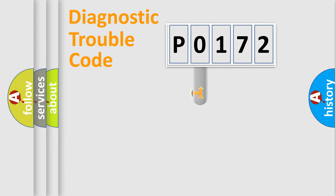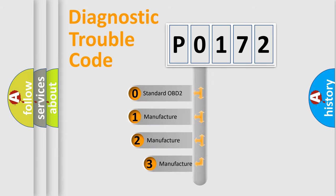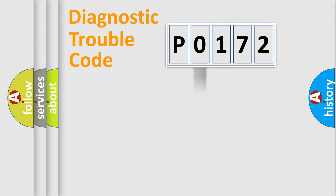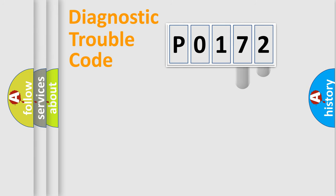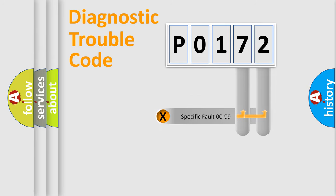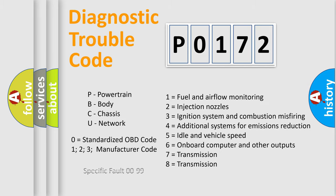This distribution is defined in the first character of the code. If the second character is expressed as zero, it is a standardized error. In the case of numbers 1, 2, or 3, it is a more specific car-manufacturer expression of the error. The third character specifies a subset of errors, and this distribution is valid only for the standardized DTC code. Only the last two characters define the specific fault of the group.